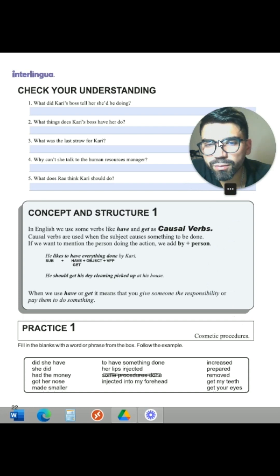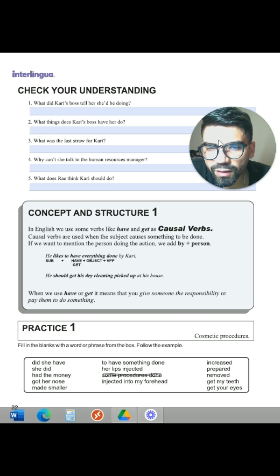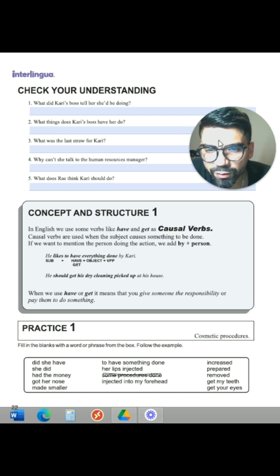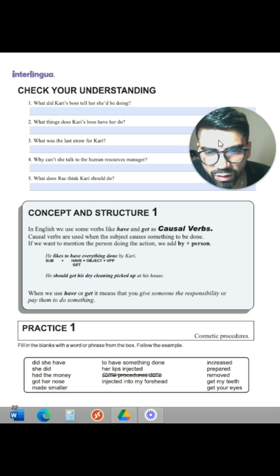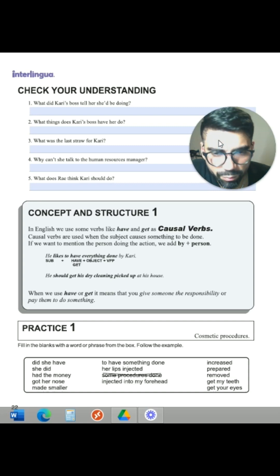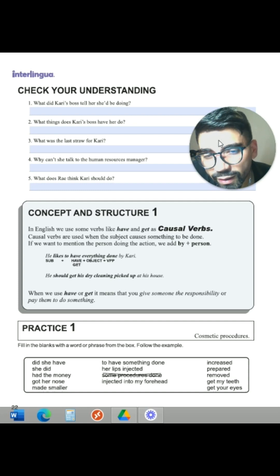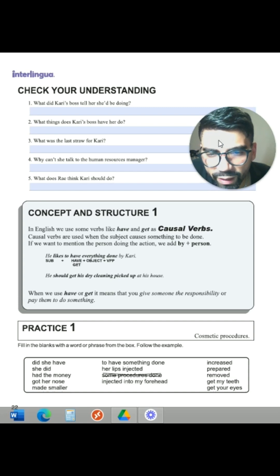We have here concept and structure number one. In English we use some verbs like 'have' and 'get' as causal verbs. Causal verbs are used when the subject causes something to be done. If we want to mention the person doing the action, we add 'by' plus the person. For example: 'He likes to have everything done by Cari.'